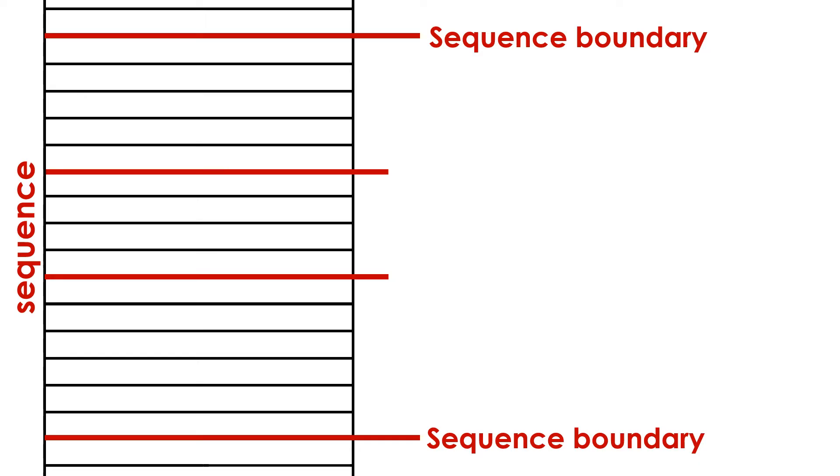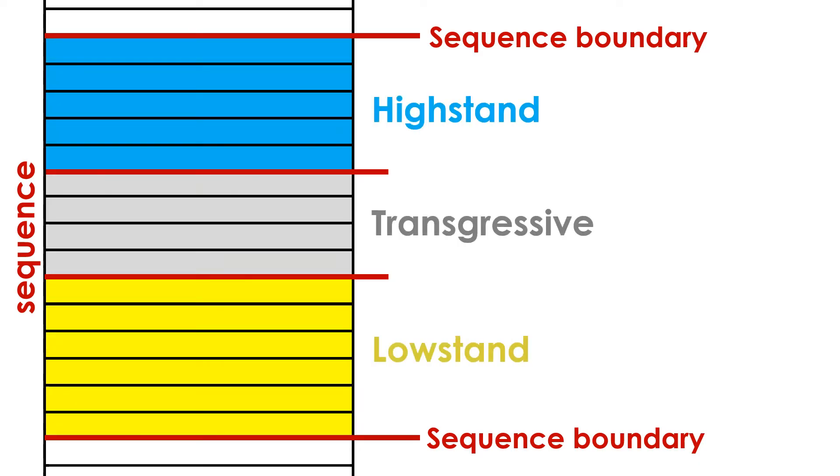Each sequence consists of multiple packages of strata called systems tracts. The three systems tracts are the lowstand, transgressive, and highstand.